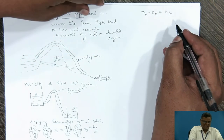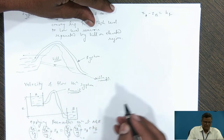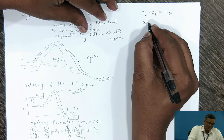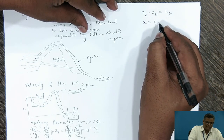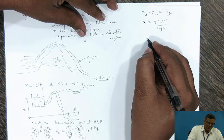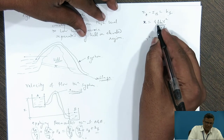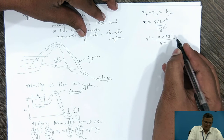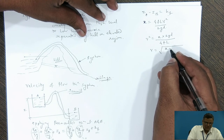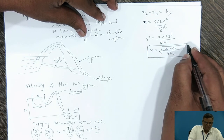Let ZA − ZB = X. Then X = HF = 4FLV²/2GD. Solving for V²: V² = X · 2GD / 4FL. Therefore, the velocity is V = √(X · 2GD / 4FL). This gives us the velocity of flow through the siphon.